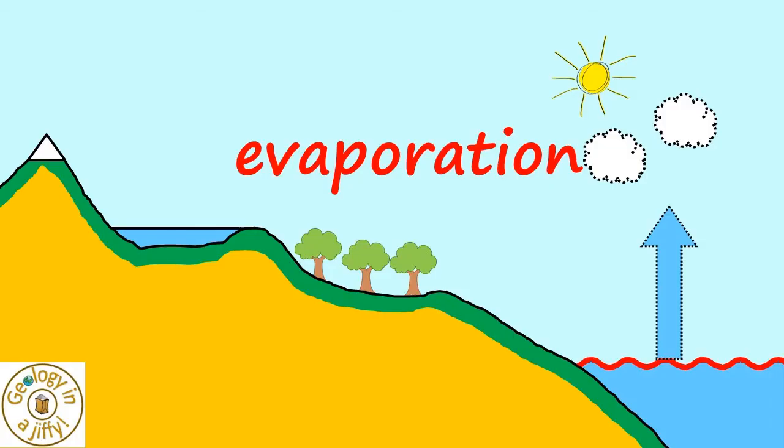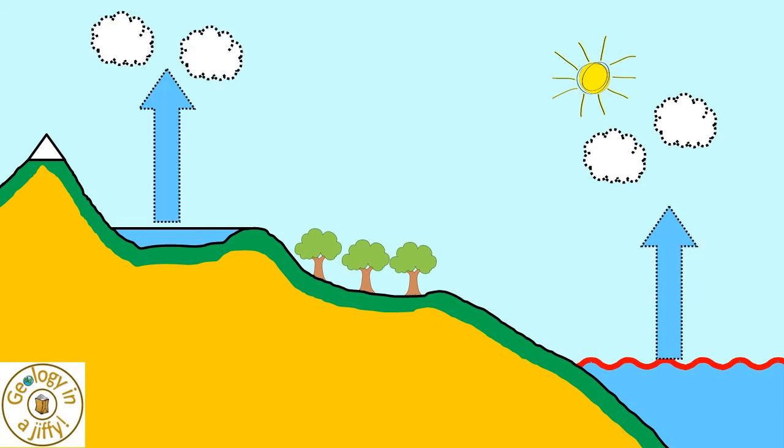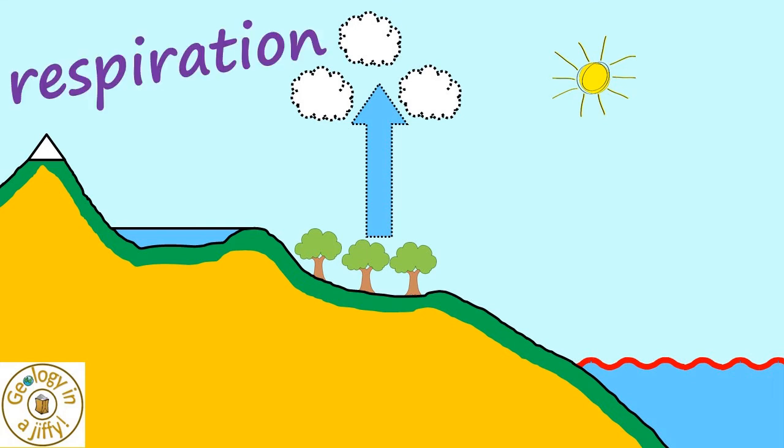And evaporation does not just happen from the warmer surface of our seas, it can happen from the surface of lakes and rivers too, with water also released from plants and animals by the processes of respiration and transpiration.